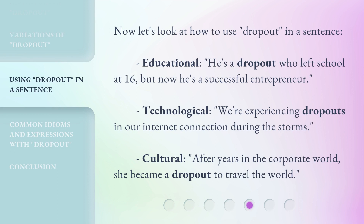Now let's look at how to use dropout in a sentence. Educational: 'He's a dropout who left school at 16, but now he's a successful entrepreneur.' Technological: 'We're experiencing dropouts in our internet connection during the storms.' Cultural: 'After years in the corporate world, she became a dropout to travel the world.'